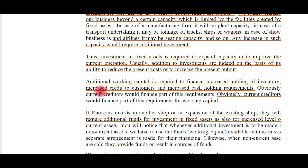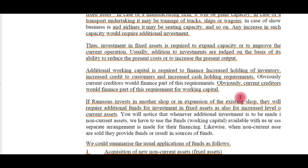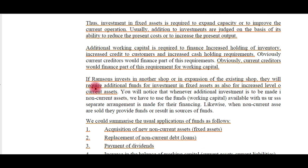Working capital is the net of current assets and current liabilities — essentially the funds required for running current operations. These operations include maintaining inventories, giving credit to customers through credit sales, and meeting regular cash expenses. Current creditors will finance part of the working capital requirement. In the Ramsons example, if Ramsons invests in another shop or expands the existing shop, they will require additional funds for fixed assets as well as for increased levels of current assets.